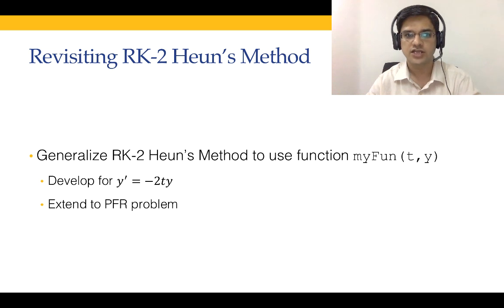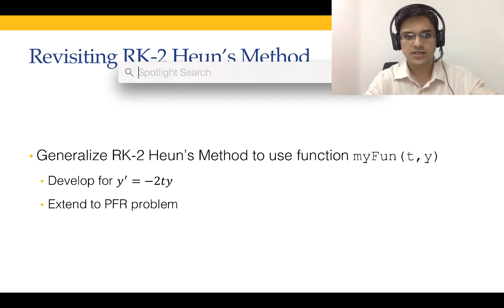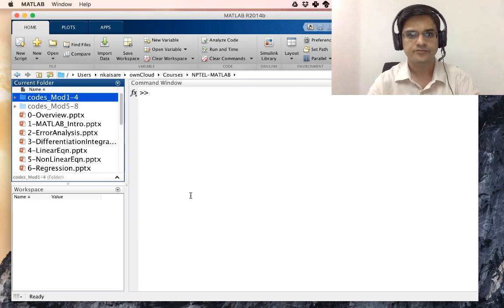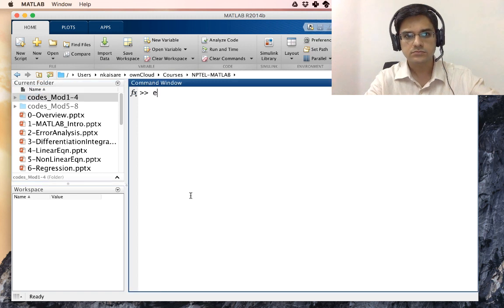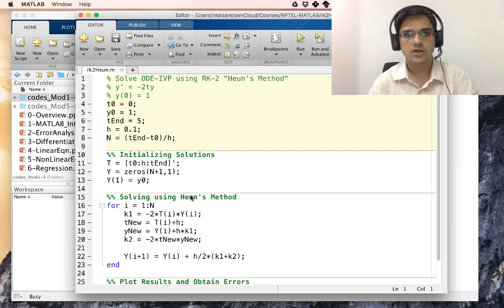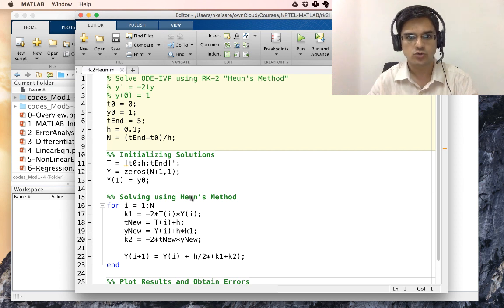Let us go ahead and modify the code. First, we will do this for the system y dash equal to minus 2ty, then we will extend it to the PFR problem. Let us go to MATLAB. This is the RK2-Heun's method that we had written in lecture 7.2. So what we are going to do is instead of this being hard-coded, we are going to replace it with using a function MYFUN.